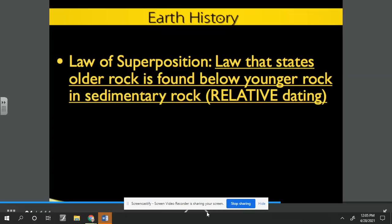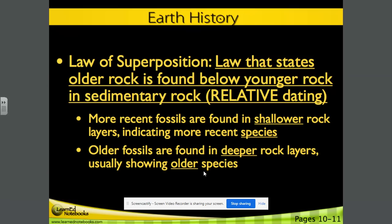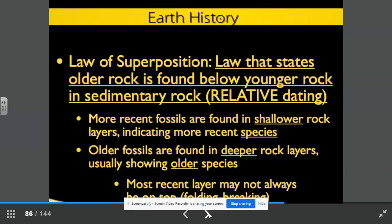More recent fossils are found in shallower rock layers, indicating more recent species. Older fossils are found in deep rock layers, usually showing older species. The most recent layer may not always be on top because of folding and breaking occurring.